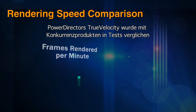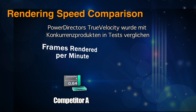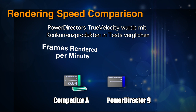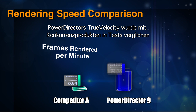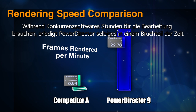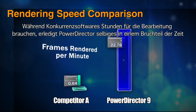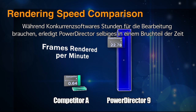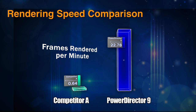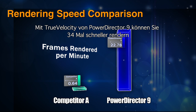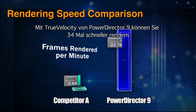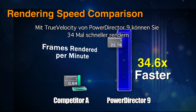We put PowerDirector 9's True Velocity 64 to the test against other consumer video editing software. While competing video editing software can take hours to render a video, PowerDirector takes a fraction of the time for the same task. With PowerDirector 9's True Velocity 64, you can render up to 34 times faster.